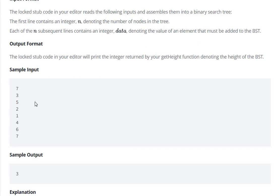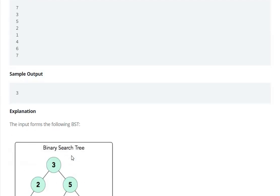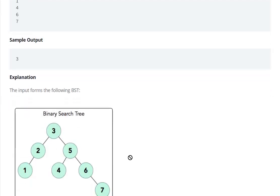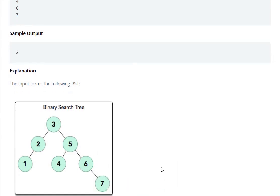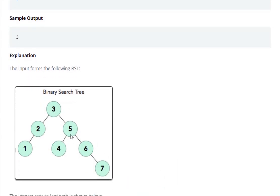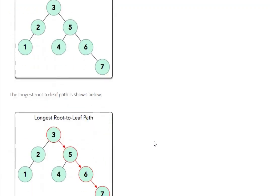So here we have binary search tree height. Here we have the root node and its furthest node. So in this example we get 1, 2, and 3 edges, so 3 will be the height.